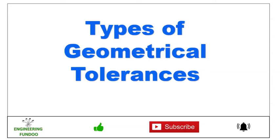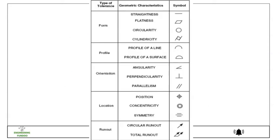Hello friends, welcome to Engineering Fundu. In this video we will discuss the types of geometrical tolerances and how they are to be applied. The types of tolerances are basically divided into five categories, and geometric characteristics along with their symbols are defined for each of these five categories. The first type of tolerance is form tolerance.